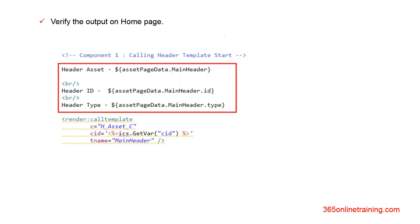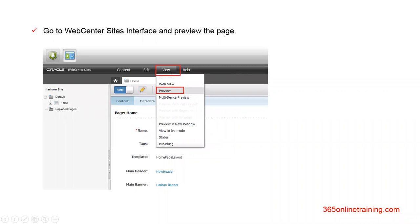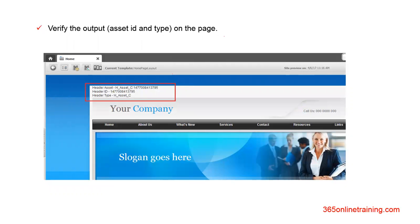After that, go to your instance, attach homepage layout to your homepage, and preview it. Note that homepage layout is the same template where we have attached our controller. Click View and Preview. Once you do that, you would see the header ID, type, and complete header information printed on the page. This verifies that the controller has been successfully used and attached to the template.